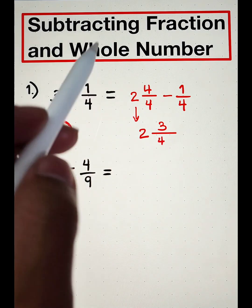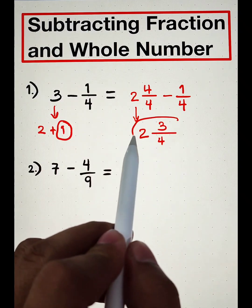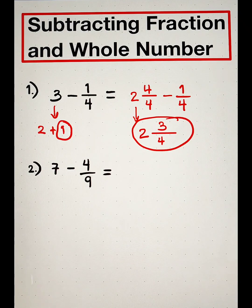And as you can see, the final answer here, guys, is 2 and 3 over 4. That's it.